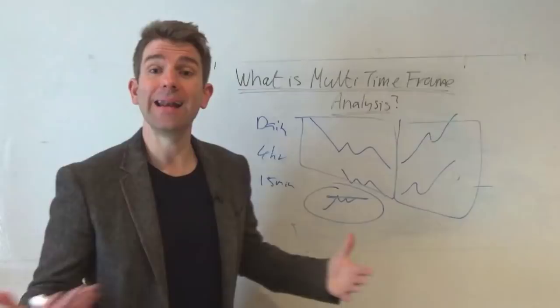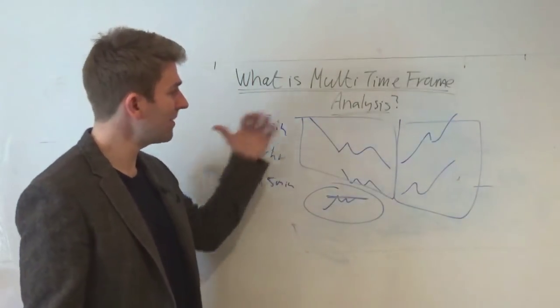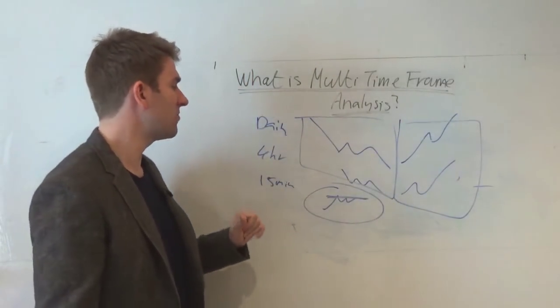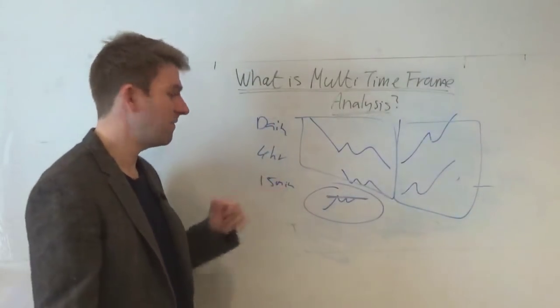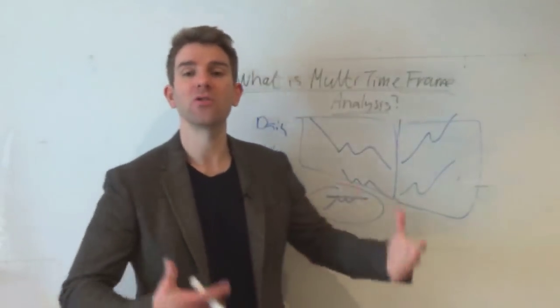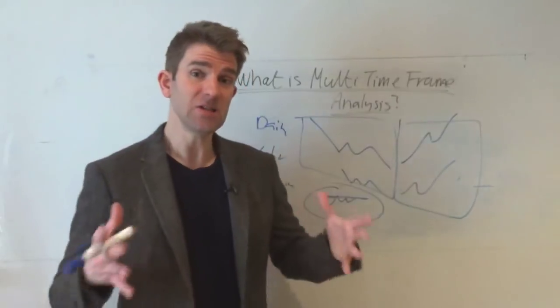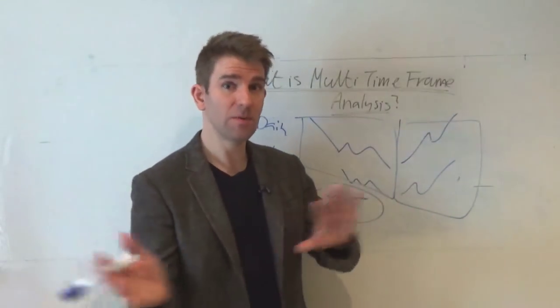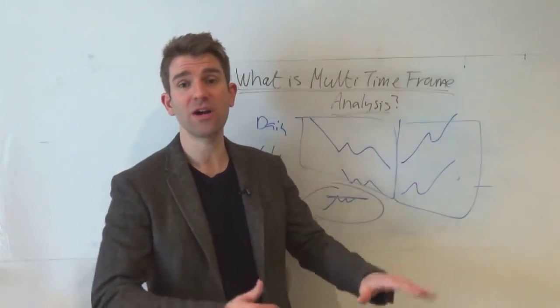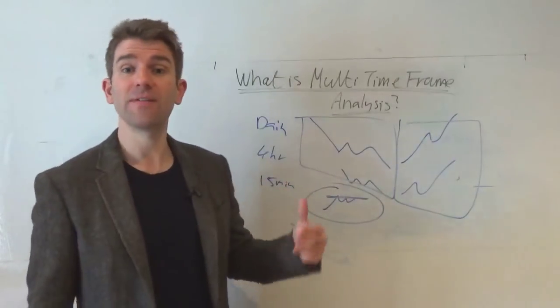We may have a situation where things are mixed. We may have a situation where daily's kind of choppy, four hour's in an uptrend, 15-minute's in a downtrend, and we can't see anything to take the trade. This is when we just pass on them. Most of them are going to be ones we just pass on and get rid of, we don't trade at all. That's absolutely fine.